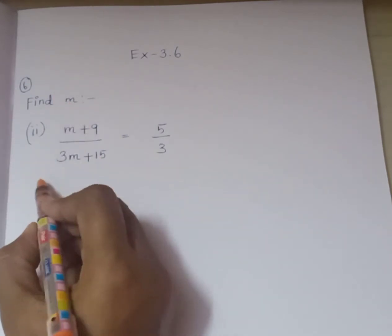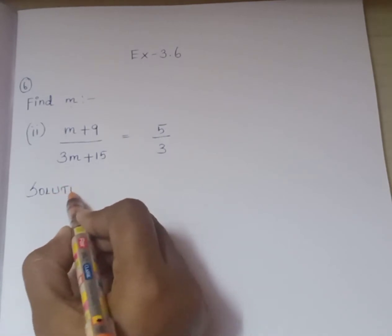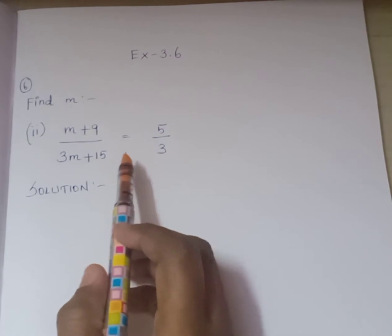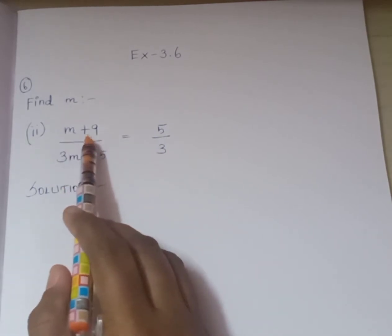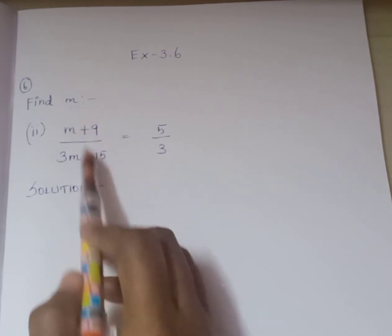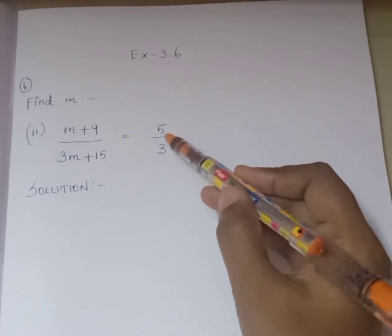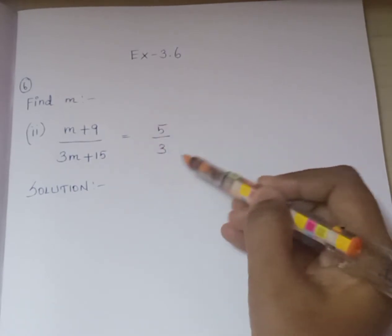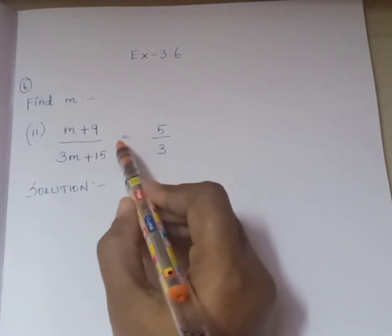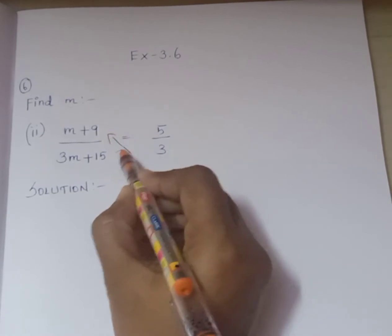Now look at this. It is given (m+9)/(3m+15). It is in the form of a fraction. On the right-hand side also, we have 5/3, that is in the form of a fraction. Fraction terms connected with an equal sign. What should we do? Yes, cross multiplication.